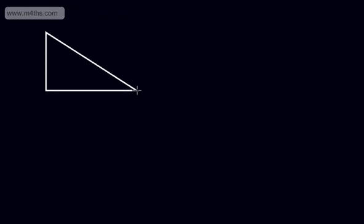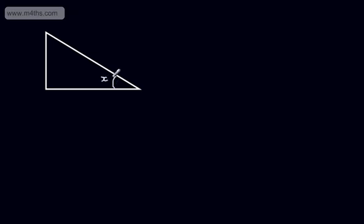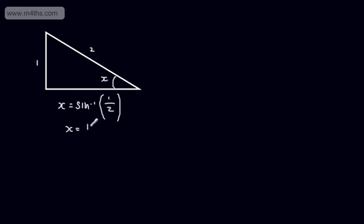This was the button that you pressed on your calculator to find a missing angle in a right-angle triangle. So if we look at an example, we have a right-angle triangle with an angle x, where the opposite side is 1 and the hypotenuse is 2. So x equals the inverse sine, or sin to the minus 1, of 1 over 2, which gives us an angle of 30 degrees, or pi by 6 radians.